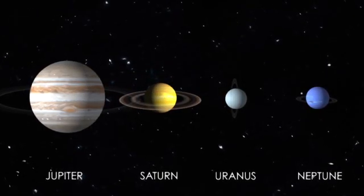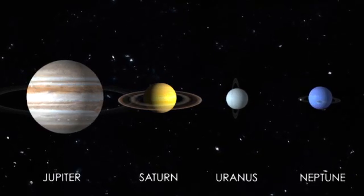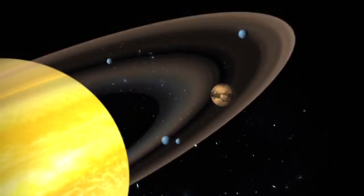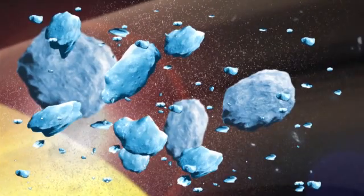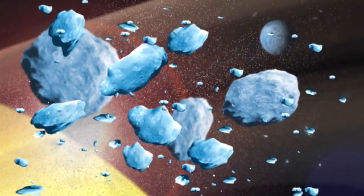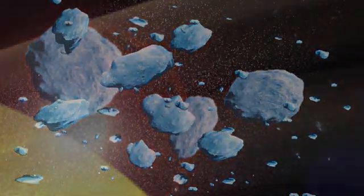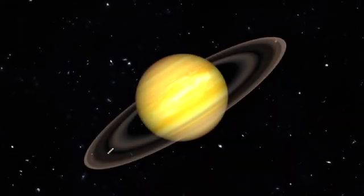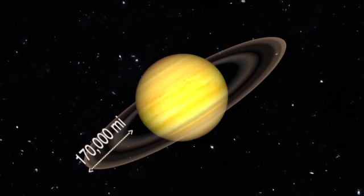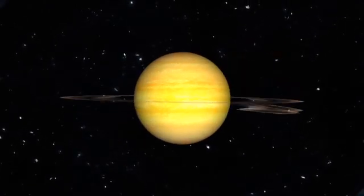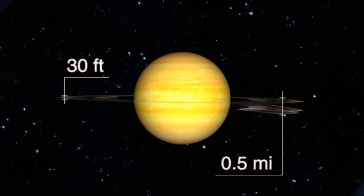Although all of the outer planets have rings, Saturn's are the only ones that are easily visible. Saturn's rings, which rotate around the planet, are made mostly from ice particles with a small amount of dust, rock, and other impurities. Its beautiful rings are nearly 170,000 miles wide, but are amazingly thin, estimated to range from as little as 30 feet to slightly more than half a mile thick.